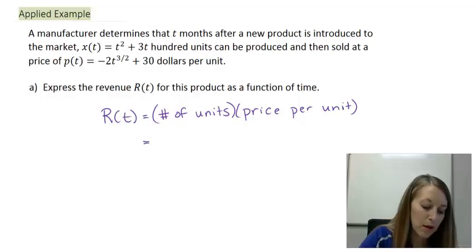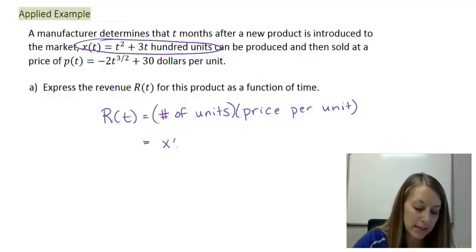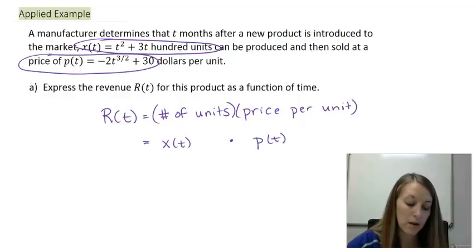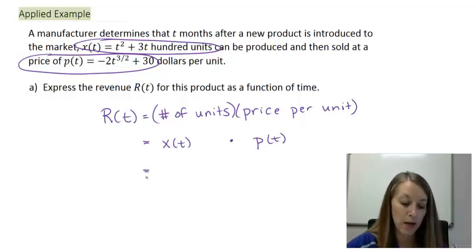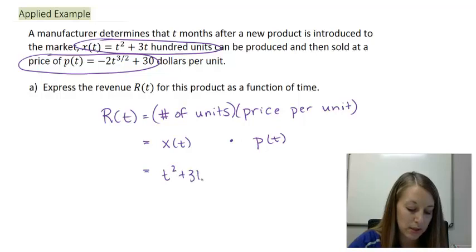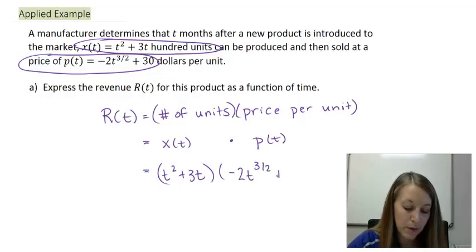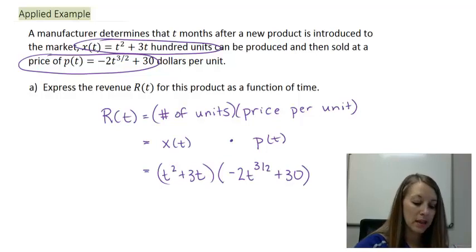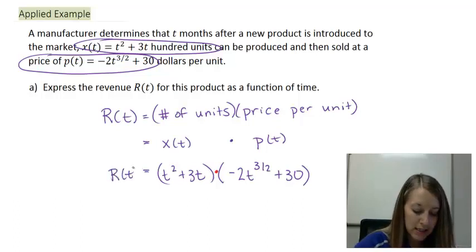So in this example, our number of units is given by x(t). So that's x(t) times the price per unit given by our p(t) equation. All we need to do is substitute in the respective equations. x(t) is given as t² + 3t times p(t) which is given by -2t^(3/2) + 30. Now I can choose to multiply this out and FOIL it, but we are in the product rule section. So we're going to leave this as a product so we get to use our product rule in part B. My revenue equation is defined as this right here.